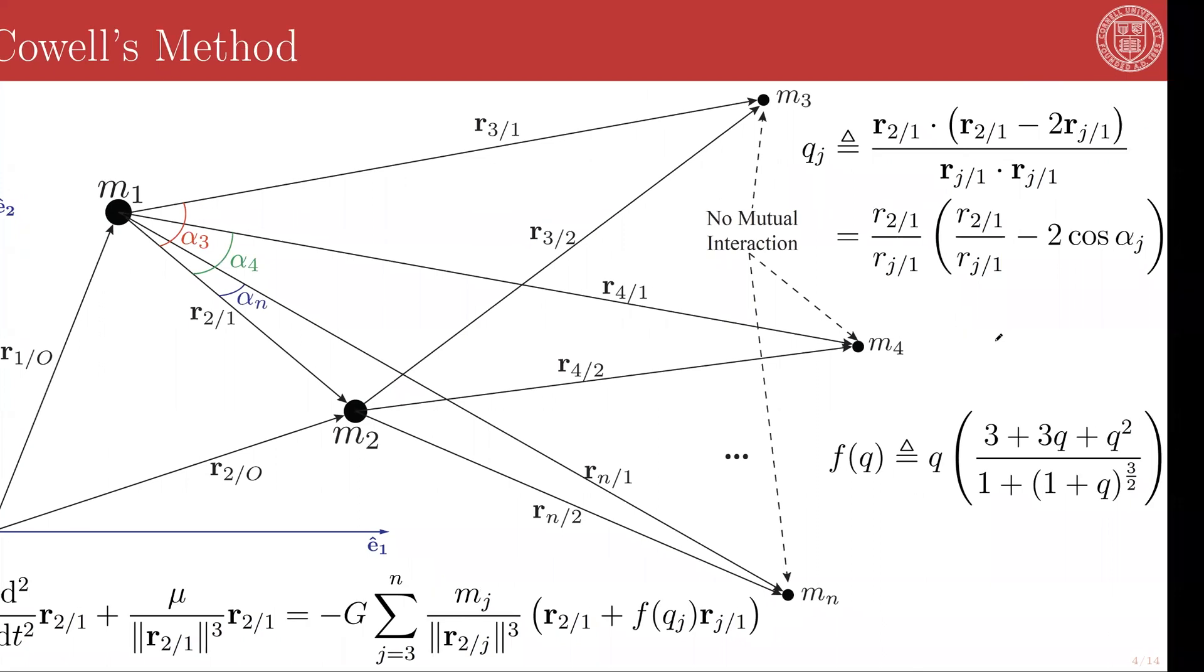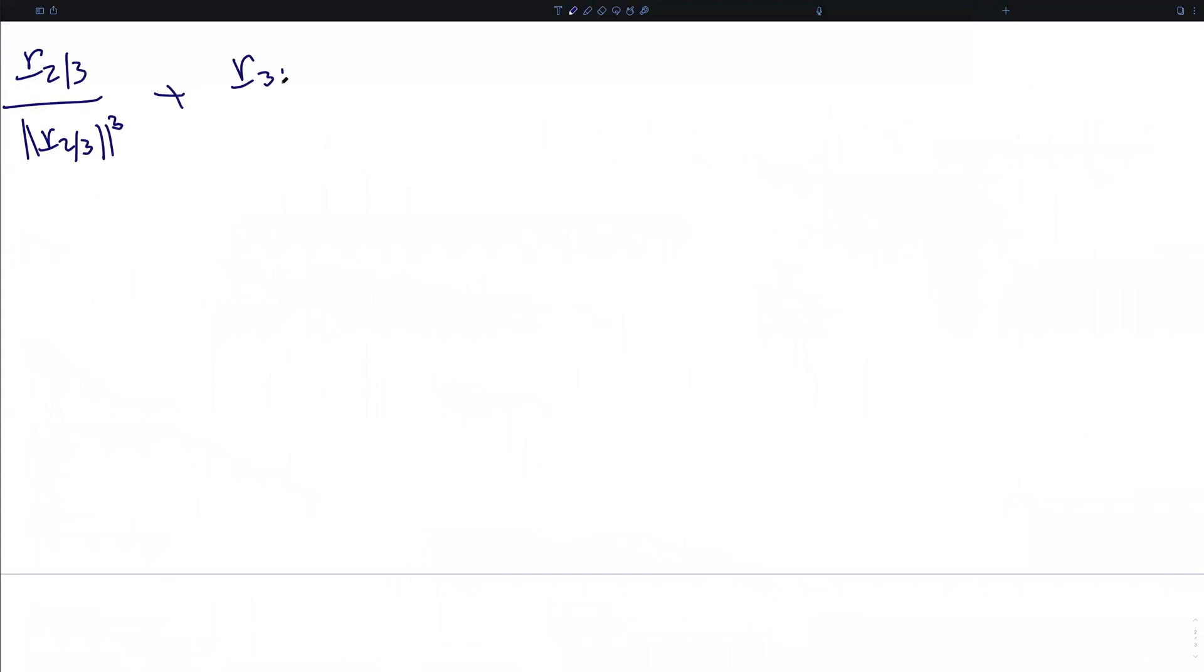And what these definitions allow us to do is to rewrite that problematic term as 1 over the norm r2rel3 cubed times the quantity r2rel1 plus f of q in the r3rel1 direction.